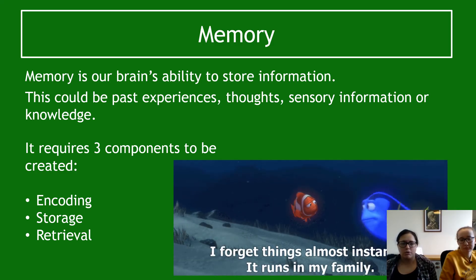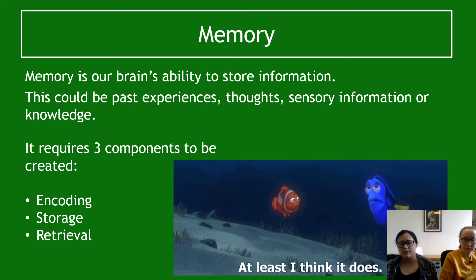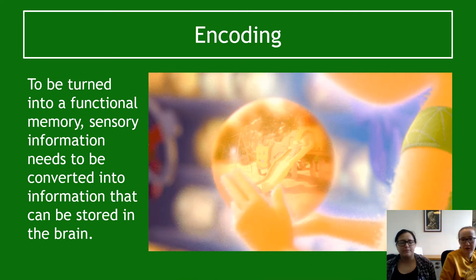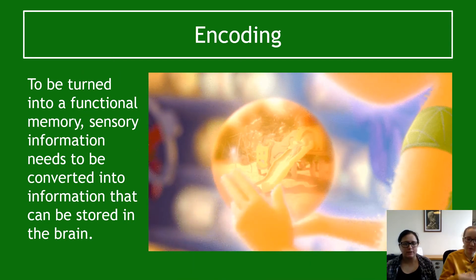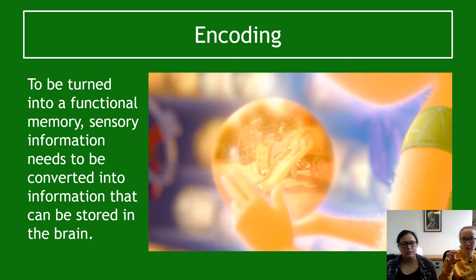Memory requires three components in order to be successfully created: it needs to be encoded successfully, it needs to be stored, and it needs to be able to be retrieved. The first thing that happens is encoding — to make a memory a proper functional memory, the sensory information needs to be encoded into a form that can actually be stored in the brain.